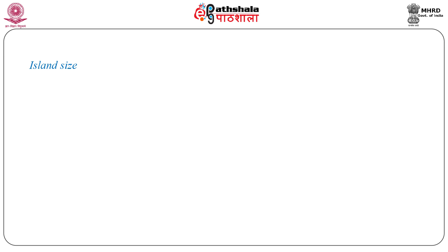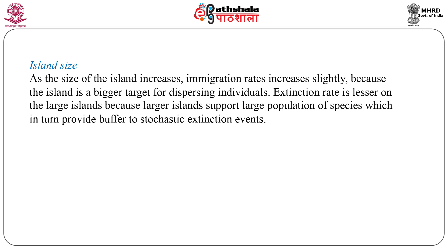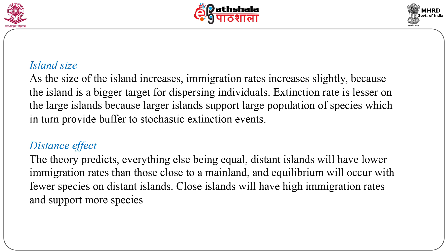Island size: as the size of the island increases, immigration rate increases slightly because the island is a bigger target for dispersing individuals. Extinction rate is lesser on large islands because larger islands support larger populations of species, which in turn provide a buffer to extinction events. Distance effect: as the distance from the mainland increases, the immigration rate decreases, as far-away islands are more difficult to reach and fewer species are able to cross that barrier. Immigration is higher on near islands than on distant islands; hence the equilibrium number of species present will be greater on near islands.